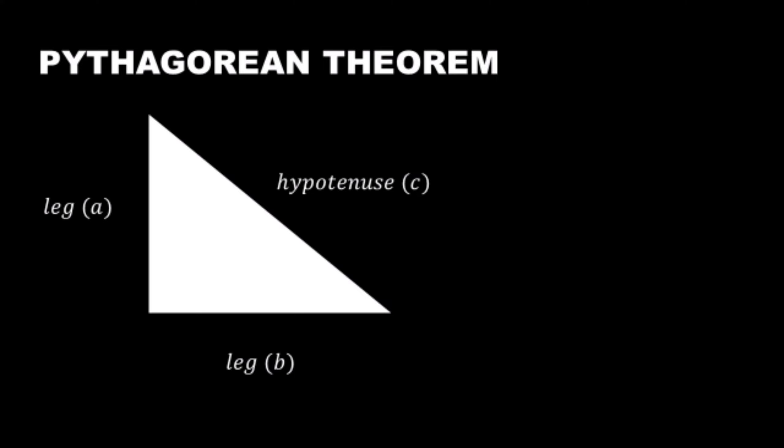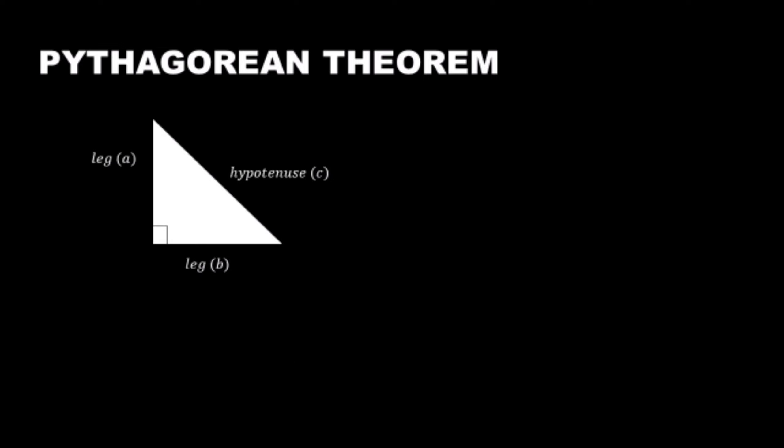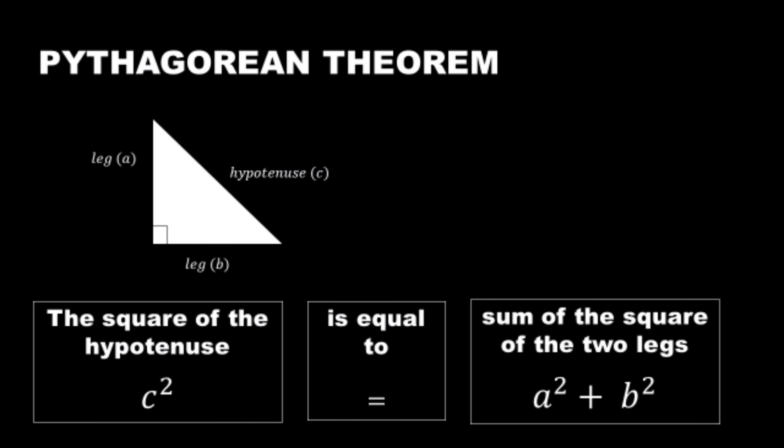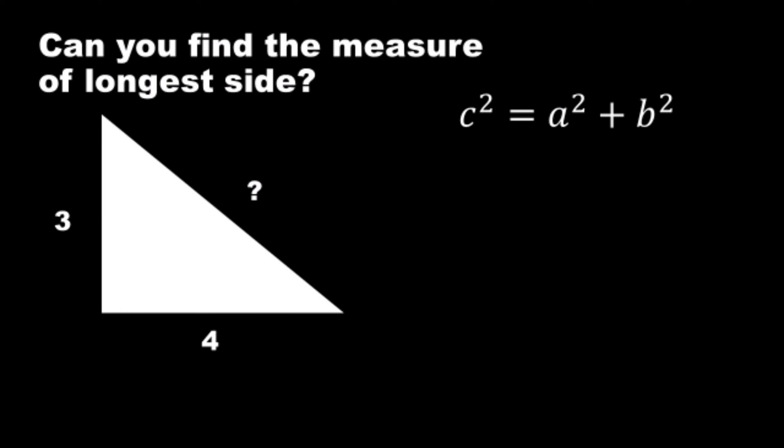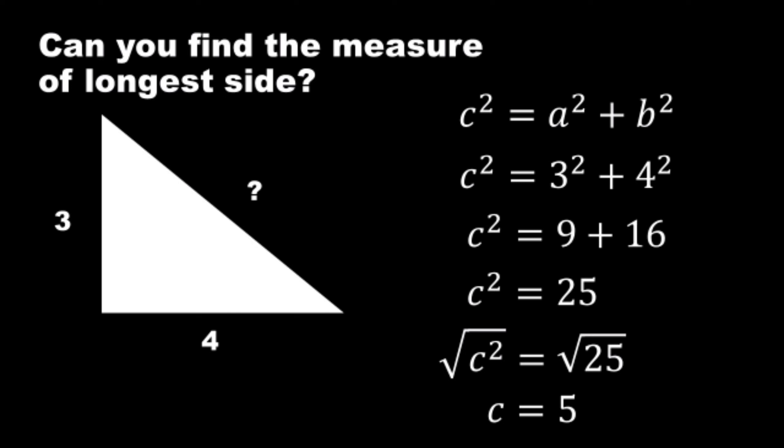Aside from being the longest side, the hypotenuse also faces the right angle. Pythagorean theorem states that the square of the hypotenuse of a right triangle is equal to the sum of the squares of the two legs. Let's use the formula. Substitute, simplify, get the square root of both sides, and we get C equals 5.